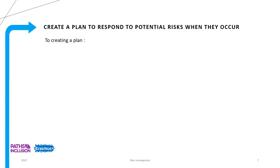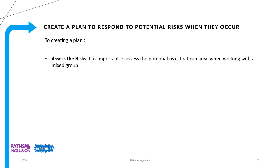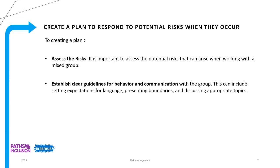The third principle is: once you have identified the potential risks, you also need to plan how to respond when they occur. Assess the risks as they arise in a mixed group before you start your activity. You also need to establish clear guidelines for behavior and communication within the group — in case something happens, who takes the lead, who phones, who drives to the hospital? If it's an international activity with people from different cultures, also decide who speaks the local language and who speaks the young person's language if English communication is limited.